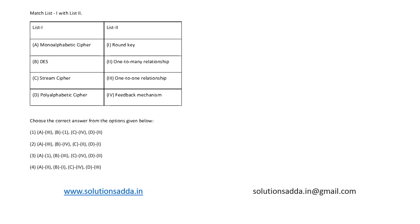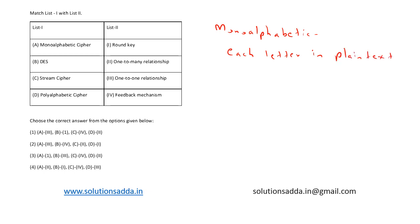In monoalphabetic cipher, each letter in the plain text is replaced with another letter, creating a one-to-one relationship. So we replace each letter in plain text with another letter, and this creates a one-to-one relationship. So we can map A with three.